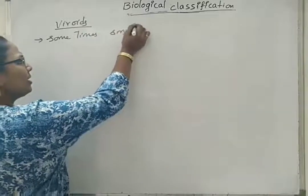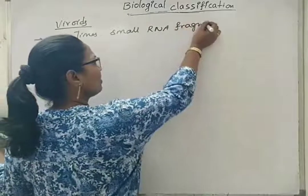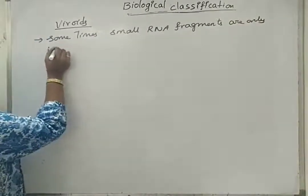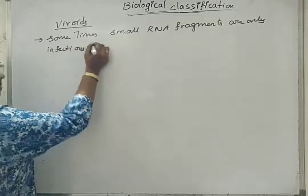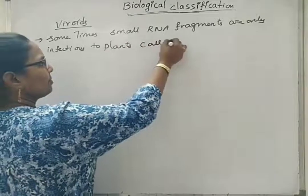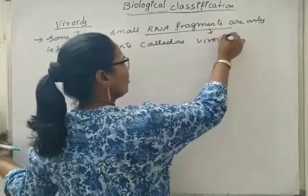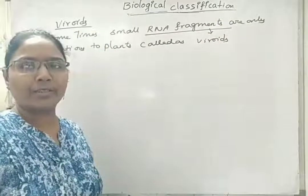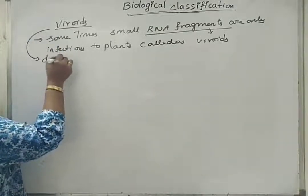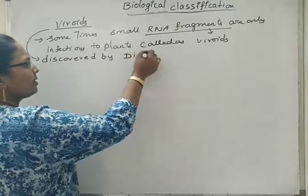Sometimes small RNA fragments are only infectious to plants — these are called as viroids. So what is meant by viroids? Small RNA infectious fragments. These were discovered by Diener.